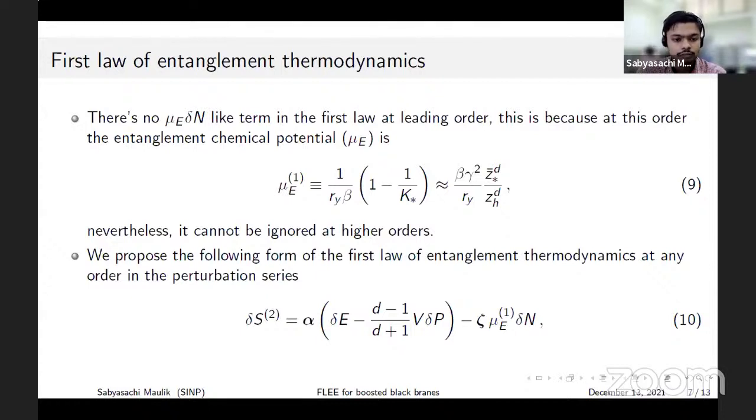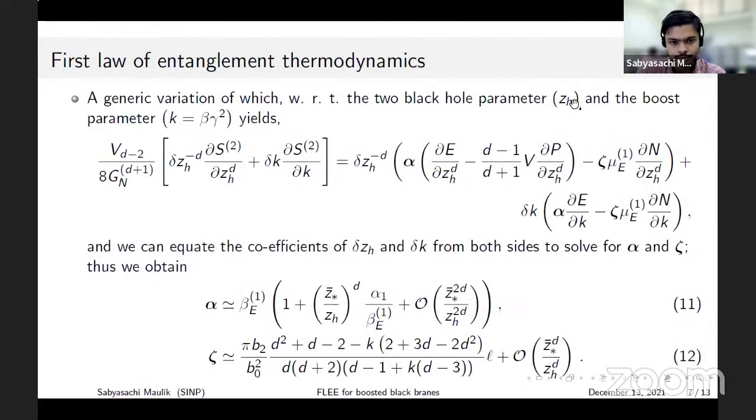To write down a first law-like relationship including the higher order corrections, we first propose that an equation of the form of equation 10 be satisfied. Here alpha and zeta are some undetermined coefficients. To determine them we perform variations on both sides with respect to the two parameters.